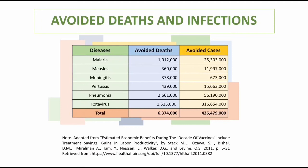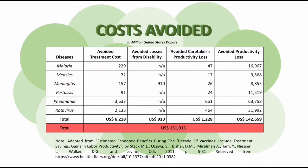By increasing the immunization rate, the said study showed that there could be a total of 6,374,000 avoided deaths and 426,479,000 avoided cases in the six diseases. The estimated decrease in deaths and cases in the 72 countries would ultimately mean that there would be costs averted. This could be the costs incurred by hospitalization, medicines, productivity loss due to falling ill, and productivity loss due to disability.